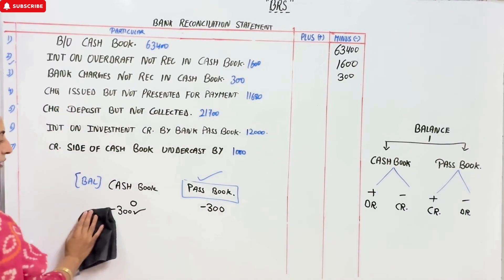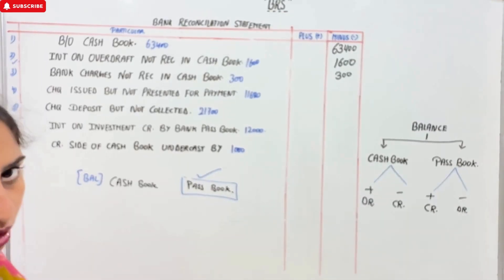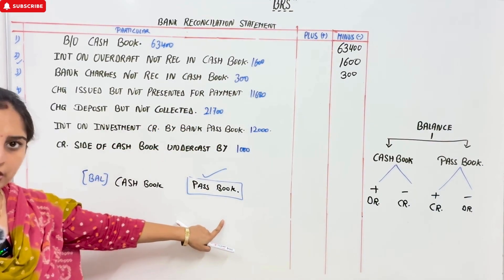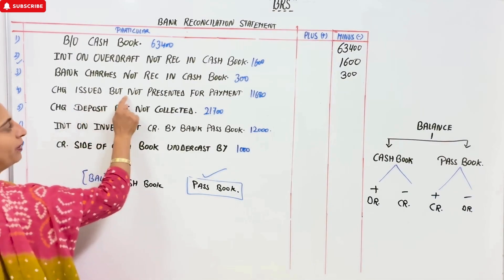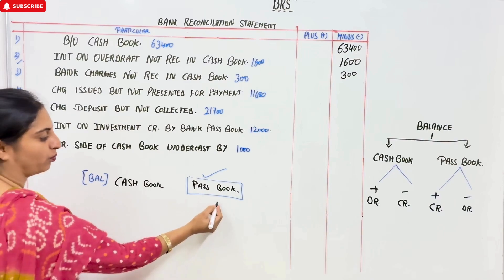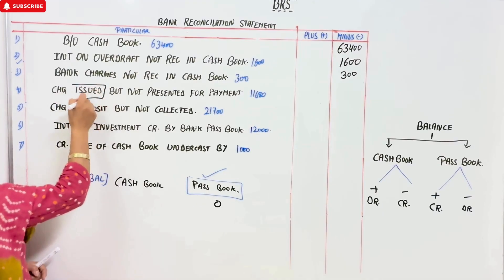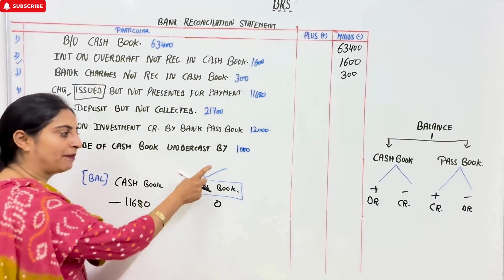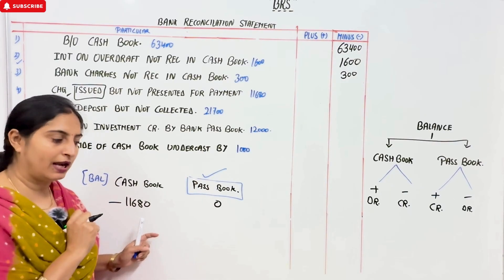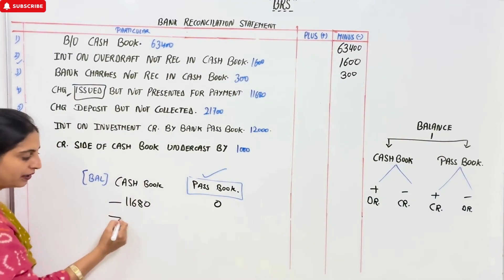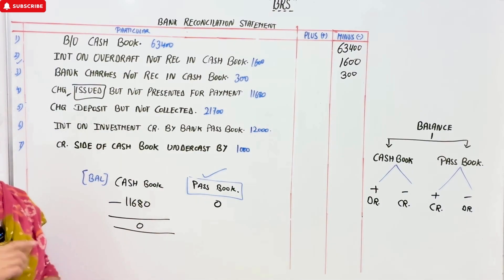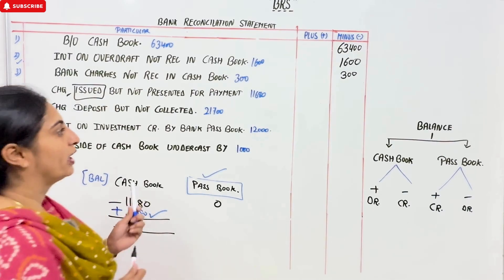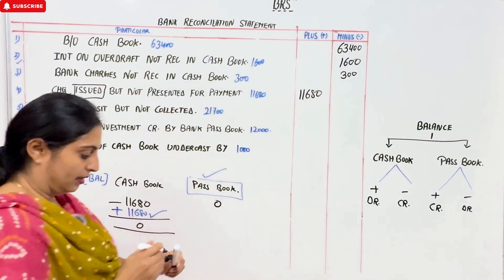Next thing is check issued but not presented for payment. Present means bank — not presented means not cleared by bank, which is pass book. Here in pass book it is zero. Check issued means the money is going to go, so here it is minus. Here it is zero — I put a tick on it and do the same total. Zero total here means I will do the opposite, which is plus. So this will go to the plus column.